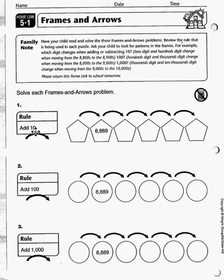In our first problem, the rule is to add 10, so every arrow we add 10. Students need to decide that because they're going back to find the first one, they actually subtract by 10. So they have 8,879.